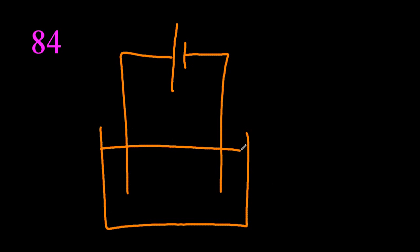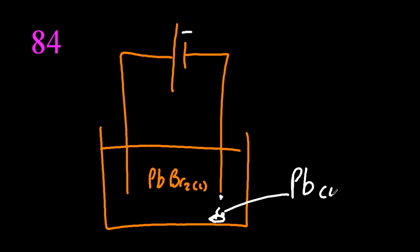So what about the other electrode? What do you see at the negative electrode? You don't see solid lead. You just see a kind of a liquid, shiny metal. Why is it liquid? Because it's hot. It's electrolysis.